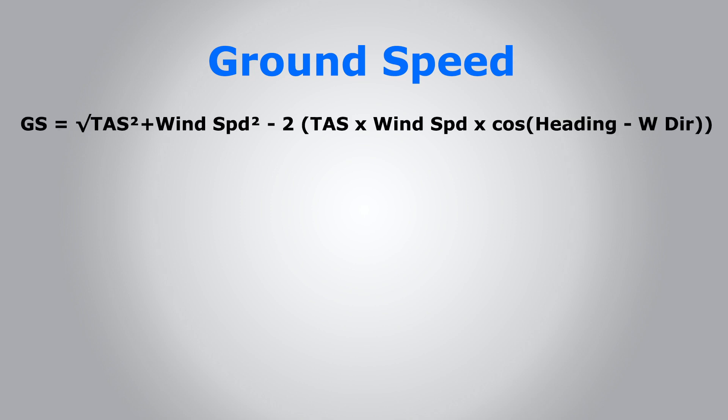And now that we have found the heading, let's move into the ground speed. So this is the formula to find ground speed: it's square root of the TAS squared plus wind speed squared minus 2 times the TAS times the wind speed times the cosine of the heading minus the wind direction. Keep in mind, guys, this is the heading, not the track, in this formula.